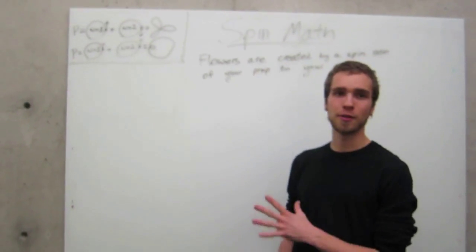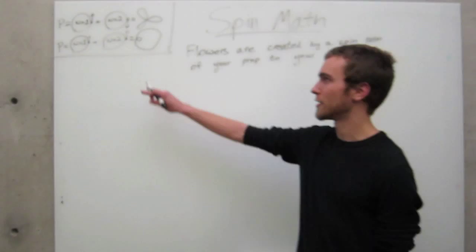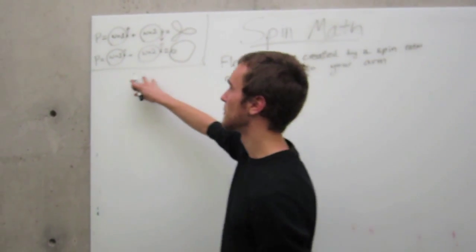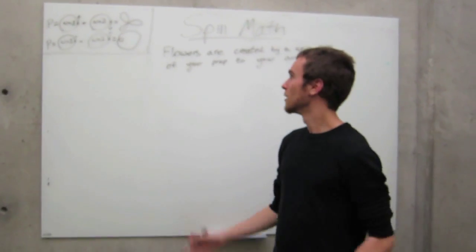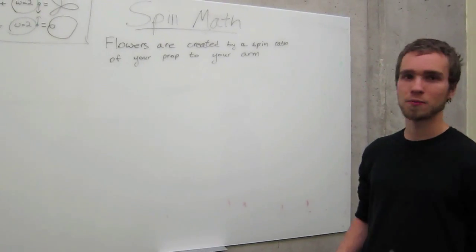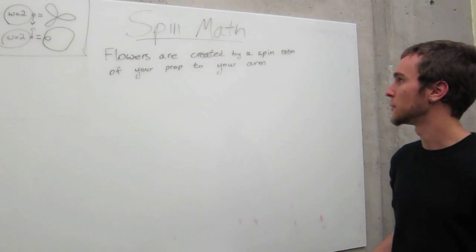Hey guys, so this is part one of my tutorial series on spin math. This right here is the conceptual model I'm going to be introducing and what we're going to use to actually graph whatever spin patterns we want to graph. We have two basic kinds of spin relationships: in-spin and anti-spin.